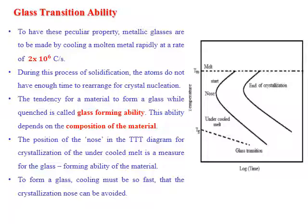When molten material is cooled from its melting temperature to a very low temperature — below the glass transition temperature — it is possible to achieve a metallic glass. The key process for achieving metallic glasses is cooling the high-temperature molten material to a very low temperature in a fraction of a second, below the glass transition temperature.